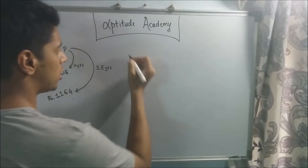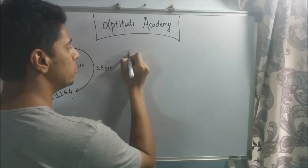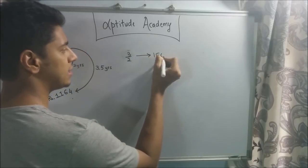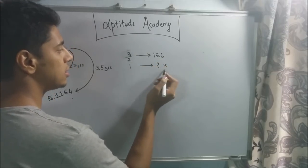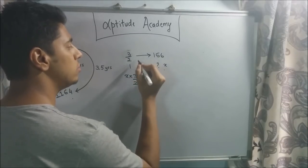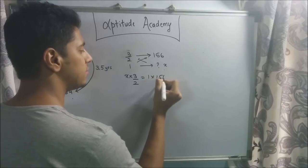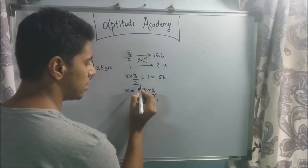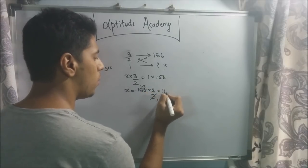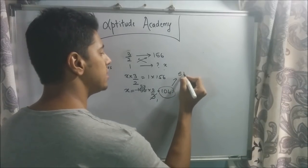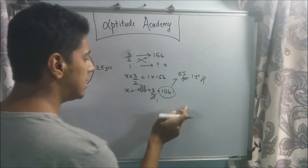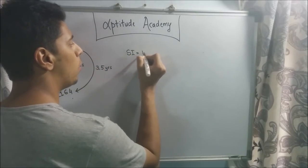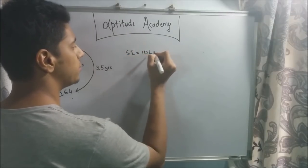We always find simple interest for one year to simplify calculations. For 3/2 years, SI is 156. For one year it is x. Cross-multiplying: x × 3/2 = 1 × 156, so x = 156 × 2/3. Calculating: 156 divided by 3 is 52, and 52 × 2 is 104. So the simple interest for one year is 104 rupees.